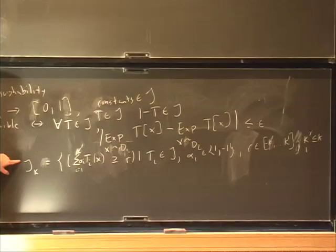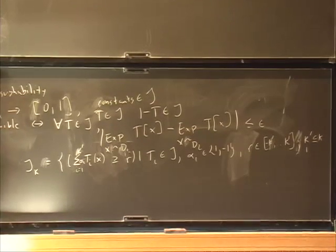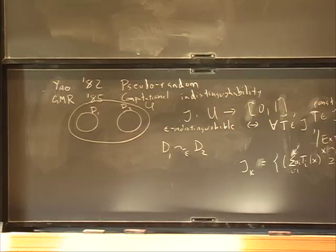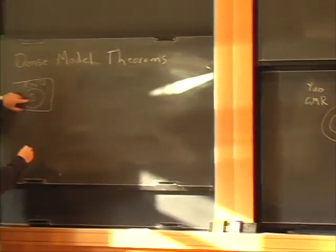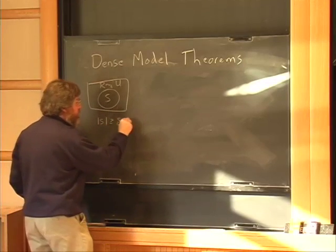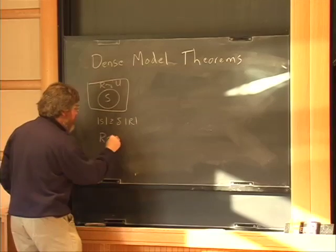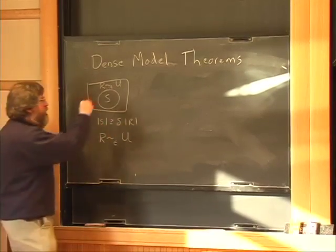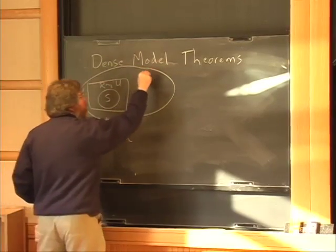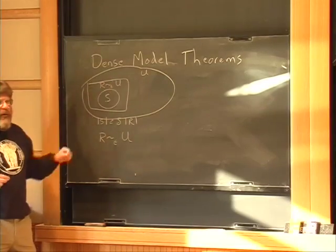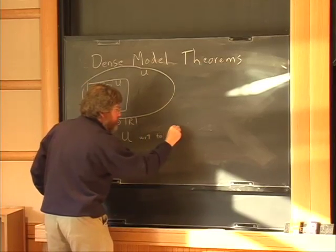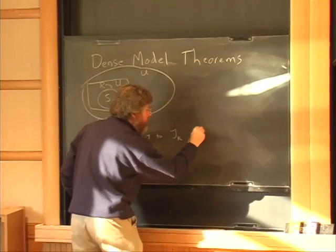Often we'll have to start off with an assumption about indistinguishability from this more general class of tests and only get a conclusion about indistinguishability versus this more limited class of tests, but often the two are related. The dense model theorem: we have S and R where the size of S is at least delta times the size of R. The uniform distribution on R is epsilon-indistinguishable from the uniform distribution on the whole set—that is, R looks like U.